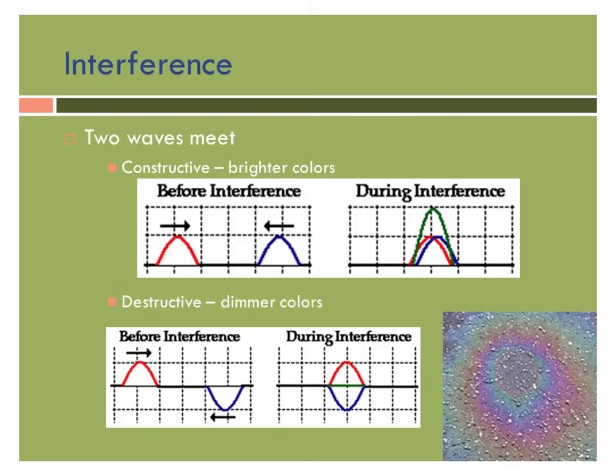We've talked about what interference means. It's when two waves combine. There are two different types. One is constructive interference. If we have two waves combining and building on top of each other we end up with brighter colors. If we have destructive interference they cancel each other out and we end up with dimmer colors.